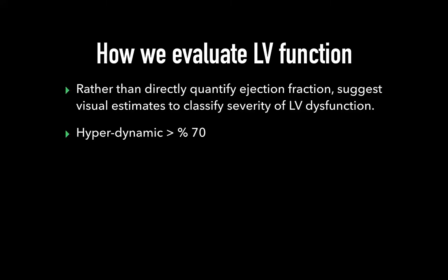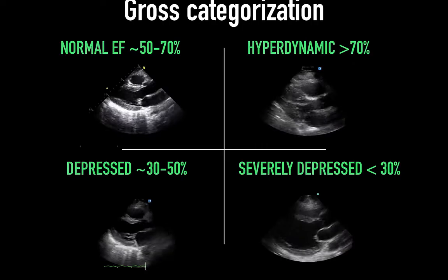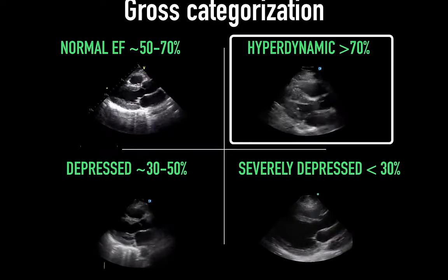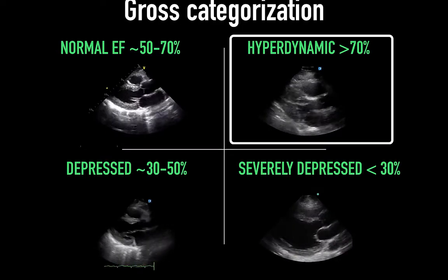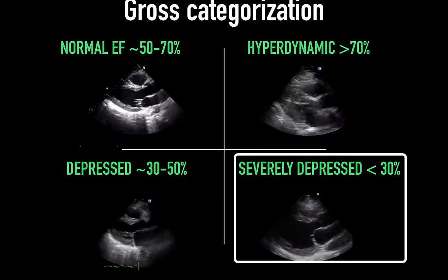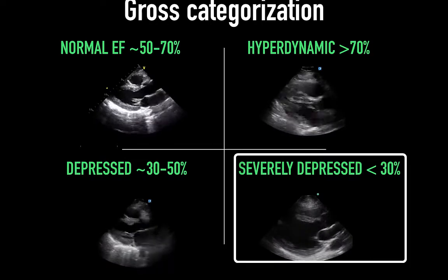On to gross categorization. We will parcel LV function into relatively discrete categories: hyperdynamic, greater than 70%; normal, 50% to 70%; depressed, 30% to 50%; and severely depressed, less than 30%. Here's a sense of the gross categorization between normal, hyperdynamic with very low end-systolic cavity volume, depressed with reduced amounts of wall motion, and severely depressed to almost akinetic amounts of wall motion.